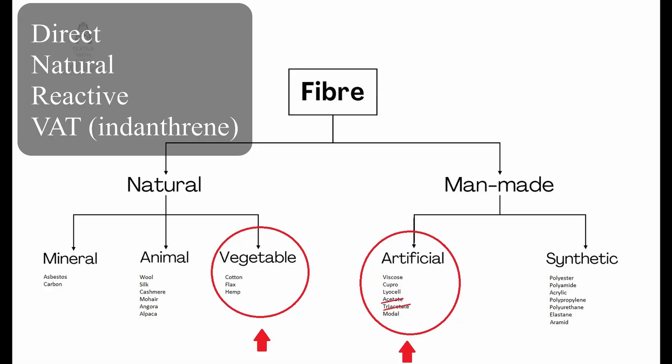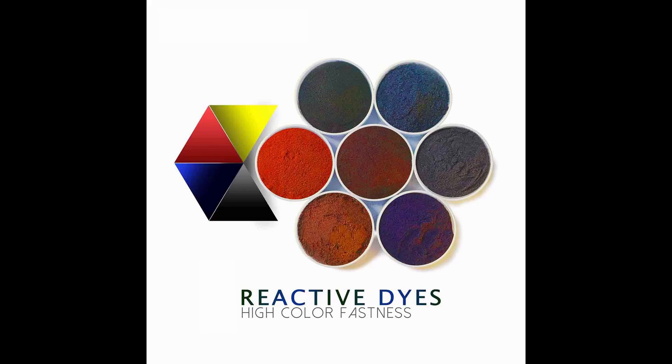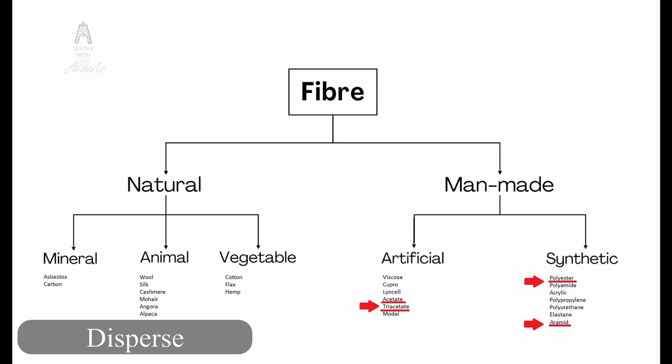Then there are direct, natural, reactive, and VAT dyes — also known as indanthrene dyes — used for vegetable fibers such as cotton or linen and artificial fibers such as viscose and cupro. Remember that with these colorants you cannot dye acetate. Last but not least, reactive dye stuffs are also used for wool and polyamide since they have better color fastnesses.